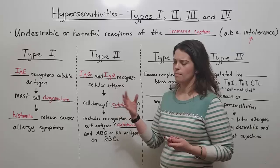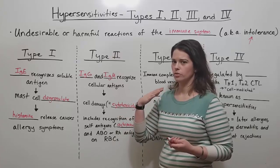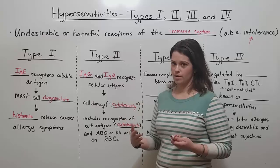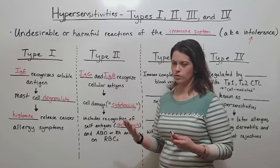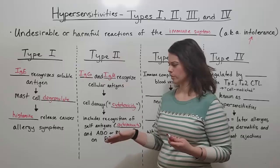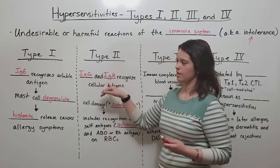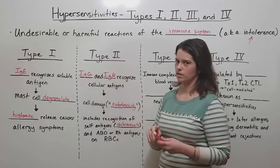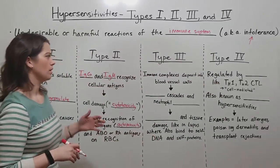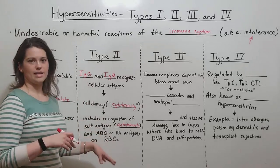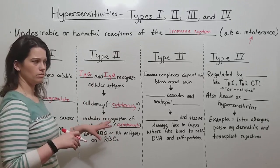Hemolytic disease of the newborn is when a mother's immune system starts to attack the baby's blood while the baby is still in utero or just afterwards, because of an incompatibility where the mother's antibodies recognize and attack the baby's different antigens.